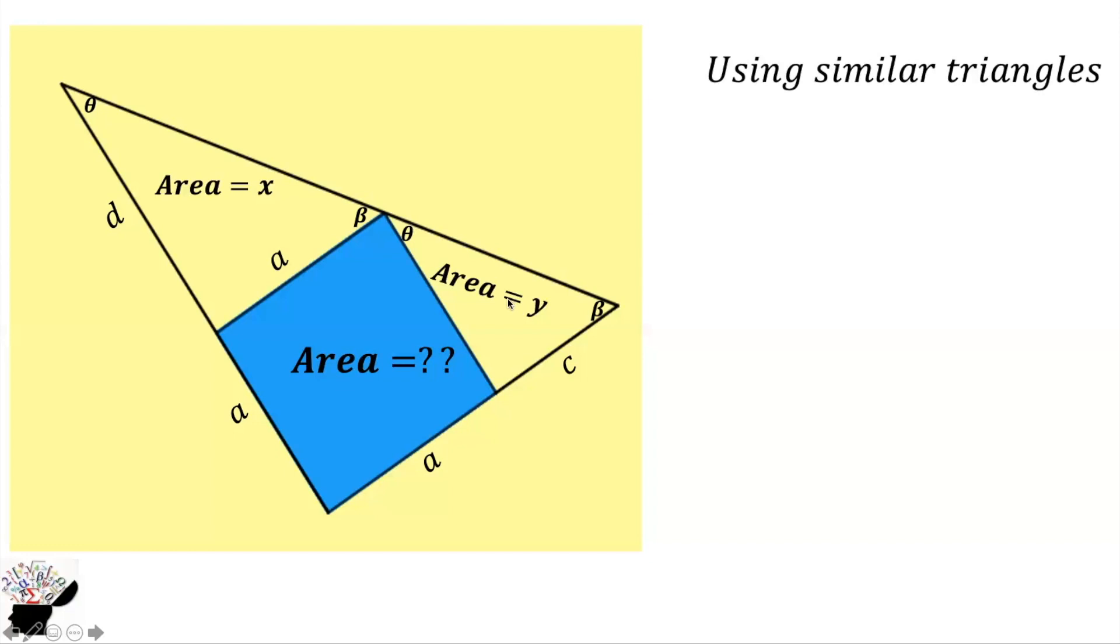Now we solve this question using similar triangles. We consider this smaller triangle and this bigger triangle. Using similar triangles, this is theta so the length would be a, and the same way this is theta so it would be c. So the ratio is a over c.